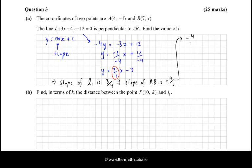So -4/3, we know, using the slope formula, is going to be t - (-1), that's y2 - y1, over x2 - x1, which will be 7 - 4. So that means -4/3 = (t + 1)/3.